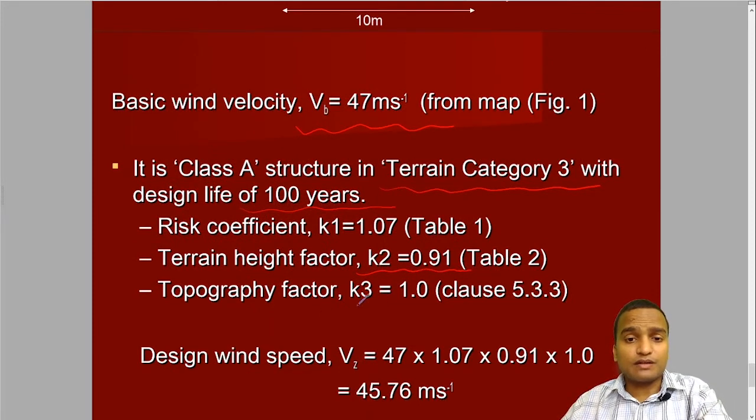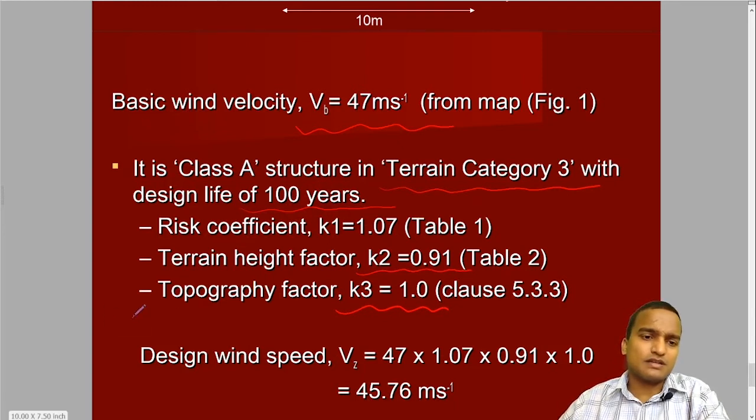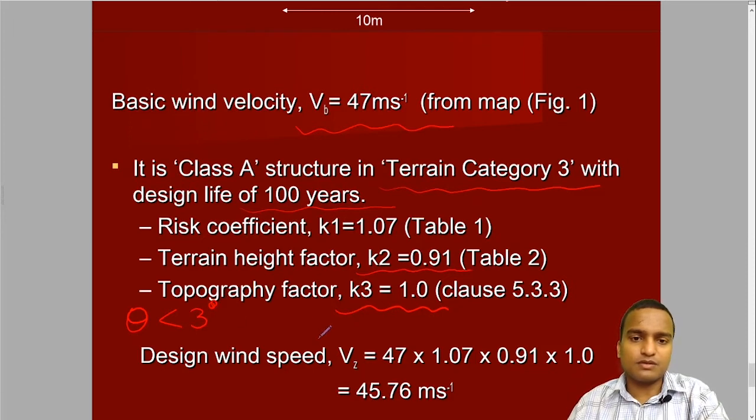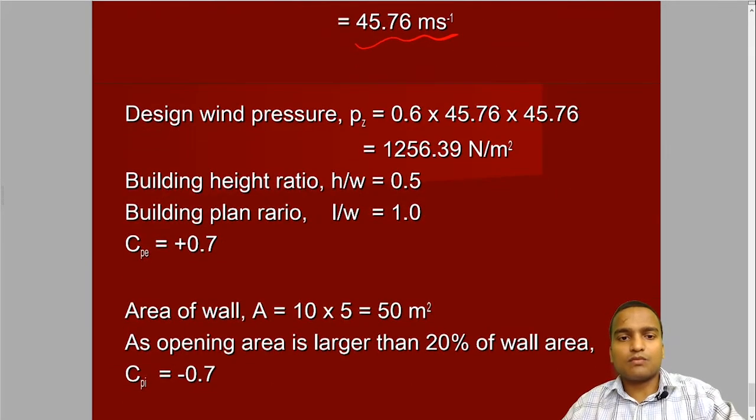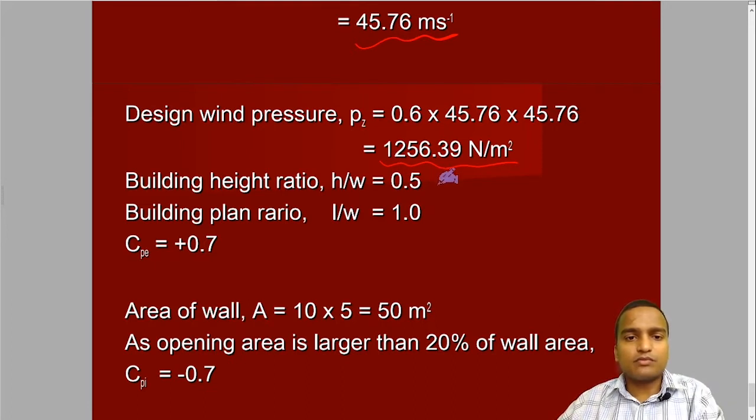The topography factor K3 is 1.0 because it's a city and theta will be less than 3 degree for the upwind slope. So the design wind speed is very easy to calculate and we have calculated the value of Vz. Now we have calculated the design wind pressure Pz is equal to 0.6 Vz square. This is the value in Newton per meter square. Then we have calculated the height ratio and plan ratio.